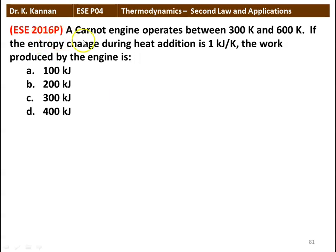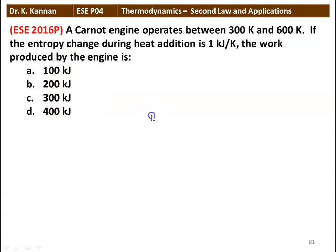Next question: a Carnot engine operates between 300 Kelvin and 600 Kelvin. If the entropy change during heat addition is 1 kilojoule per Kelvin, the work produced by the engine is: 100 kJ, 200 kJ, 300 kJ, or 400 kJ. The answer is 300 kilojoules. We will see how in the next slide.